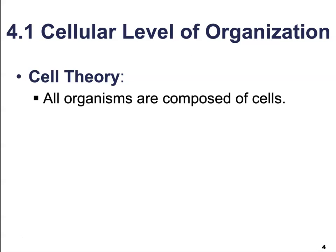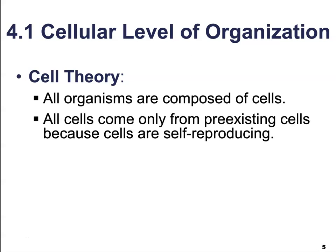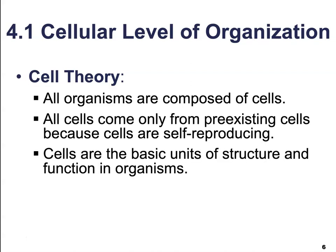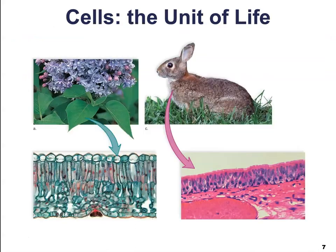Cell theory states that: one, all organisms are going to be composed of cells; all cells come from only pre-existing cells because all cells are self-reproducing; and cells are going to be the basic unit of structure and function in organisms. So cells are the basic units of life.